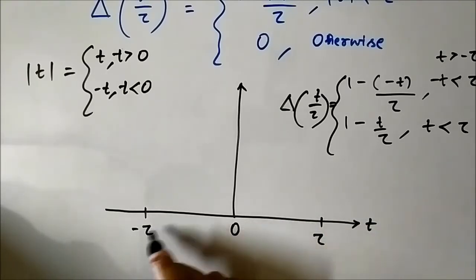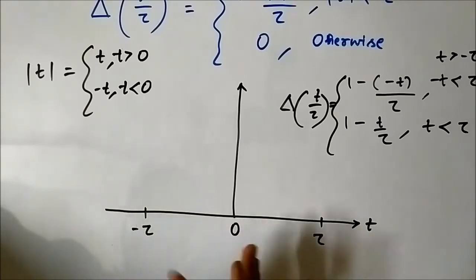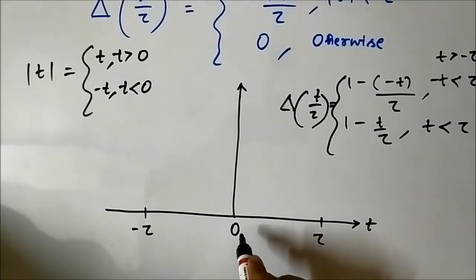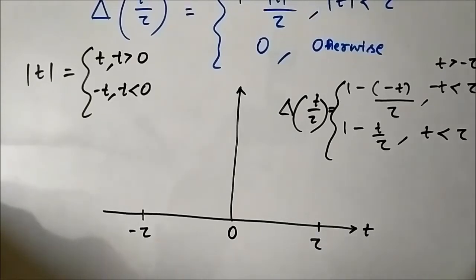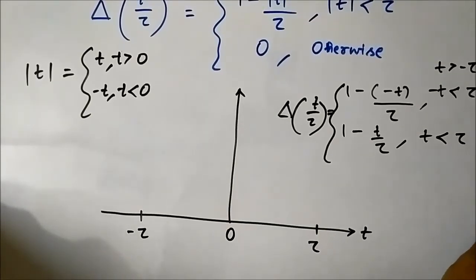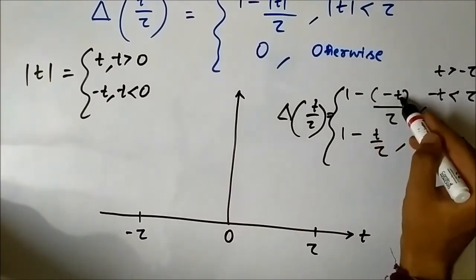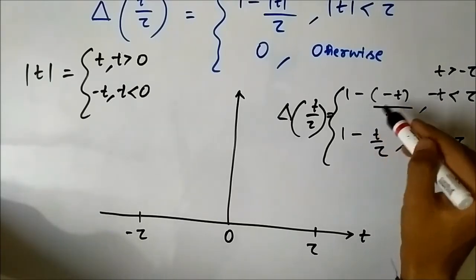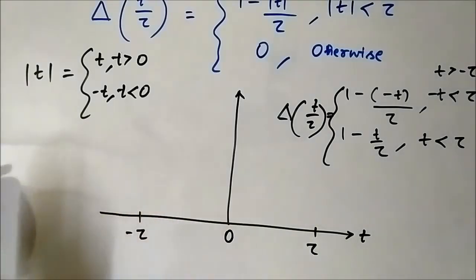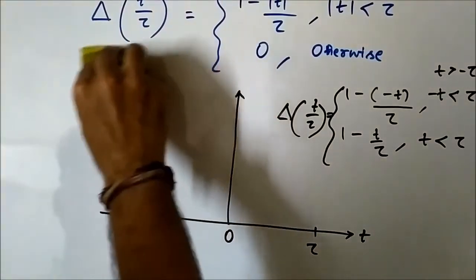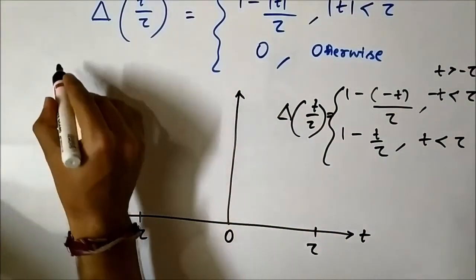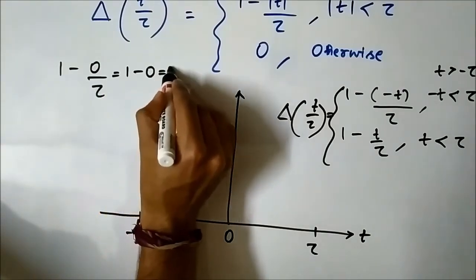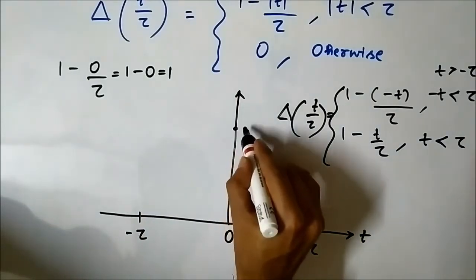Let us determine the value at t equals 0. At t equals 0, substituting into either equation gives 1 minus 0/τ, which equals 1 minus 0, which equals 1. So at t equals 0, the value of the triangular pulse function is 1.